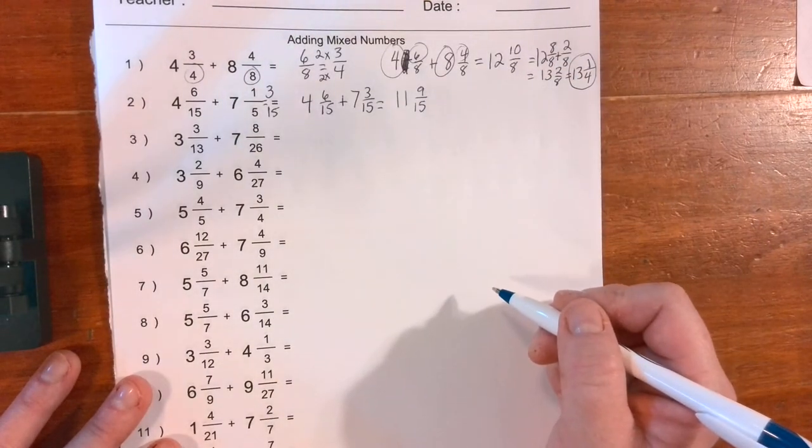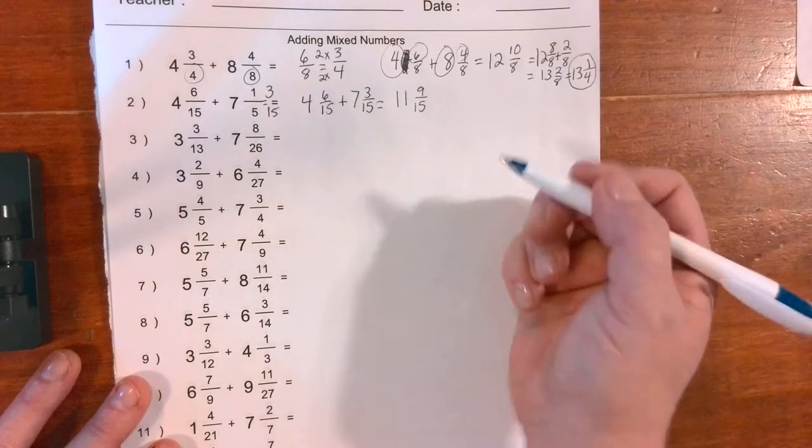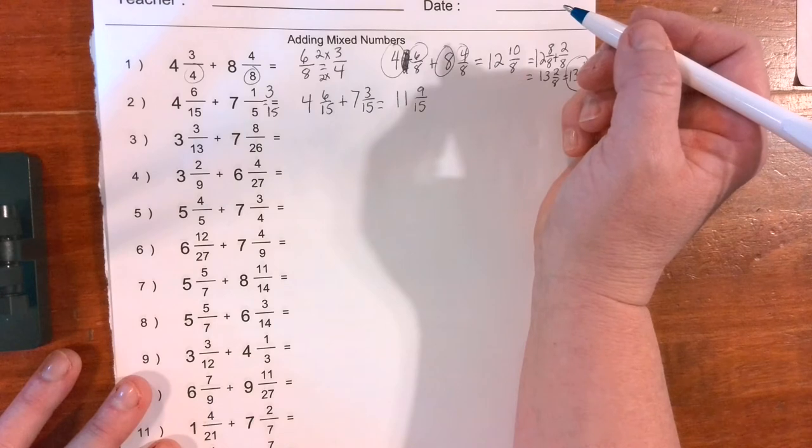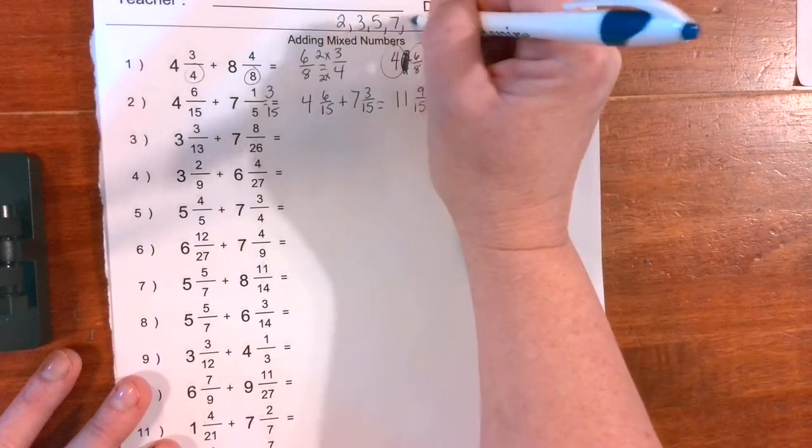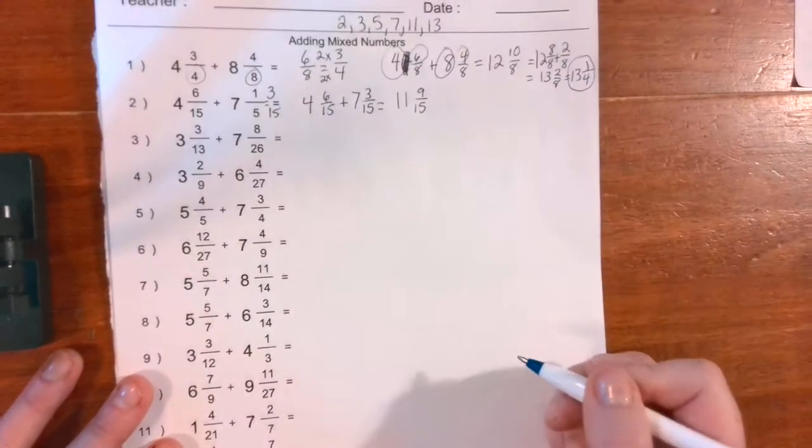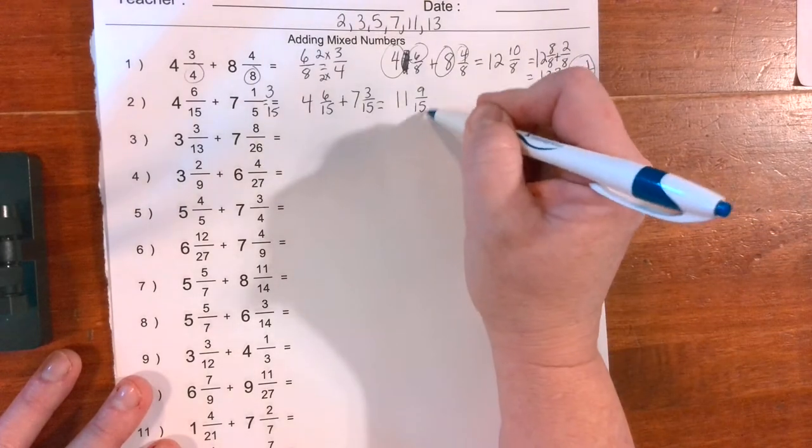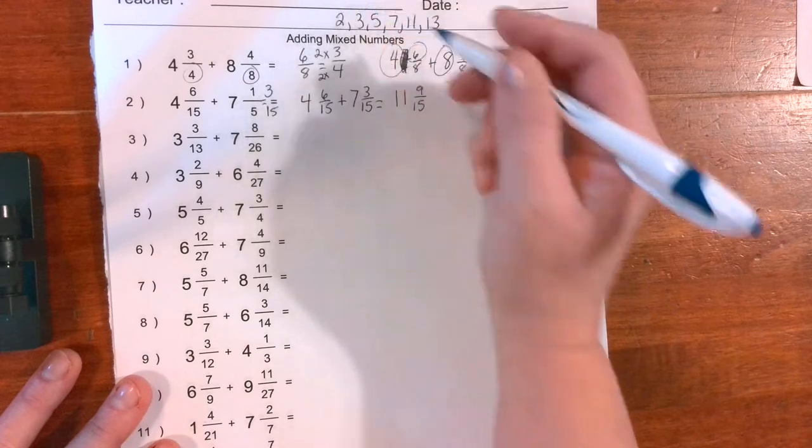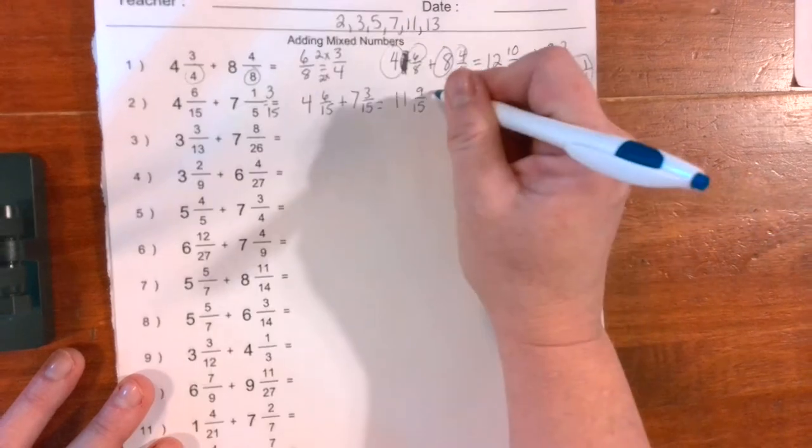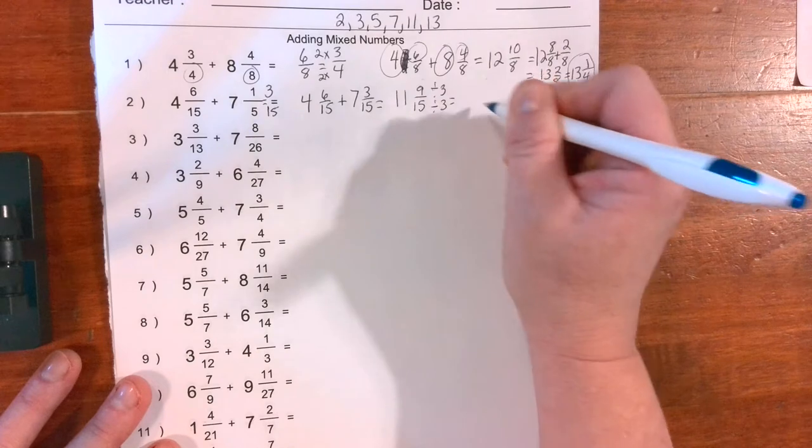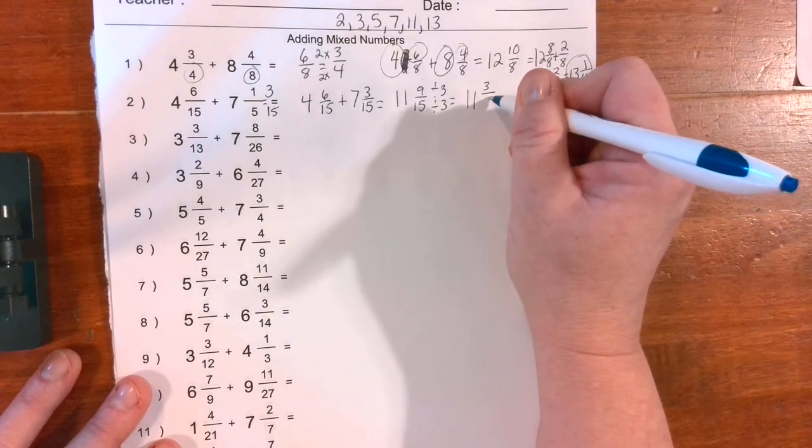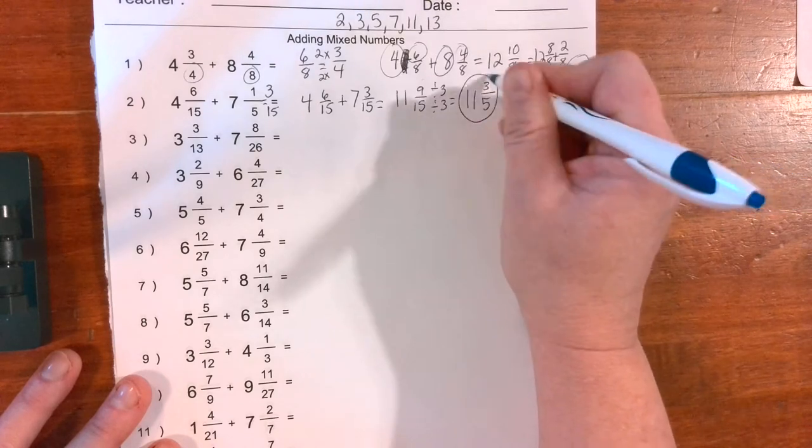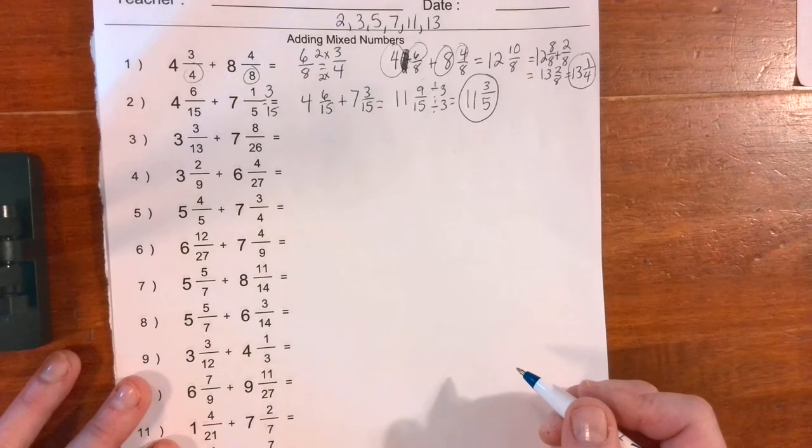How do we check? Oh, I didn't write my magic numbers. I'm going to go ahead and write them at the top. So what are our first seven magic numbers? And what do we call these numbers? Think in your head. Prime: 2, 3, 5, 7, 11, and 13. Alright, so they're not even. I can't divide by two. But I can divide them both by three. Remember, if you do it to the top, you got to do it to the bottom. Nine divided by three is three. Fifteen divided by three is five. So our final answer is 11 and 3/5.